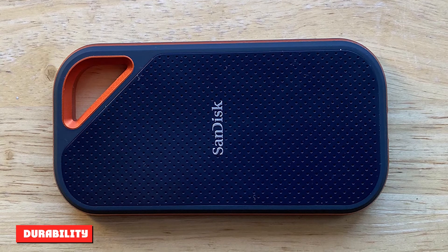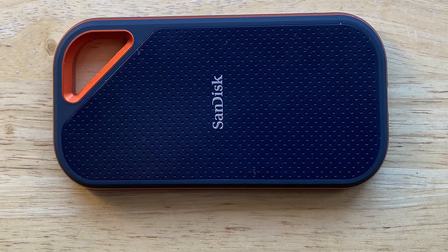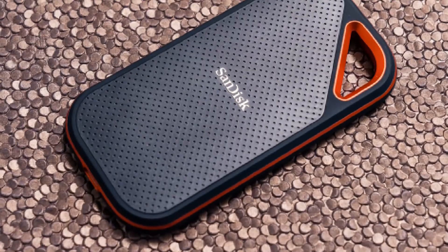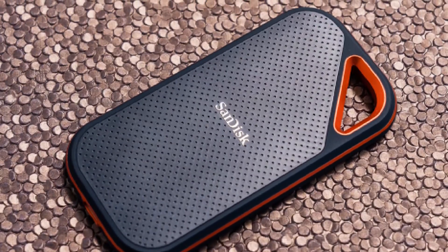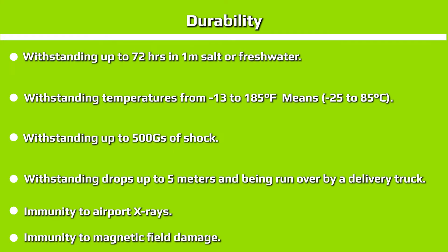Durability: Both SanDisk Extreme and Ultra cards are tested to the same quality standards. Per SanDisk, their cards are capable of withstanding up to 72 hours in salt or fresh water, temperatures from -13°F to 185°F (-25°C to 85°C), up to 500G of shock, drops of up to 5 meters, and being run over by a delivery truck. They also have immunity to airport X-rays and magnetic field damage.